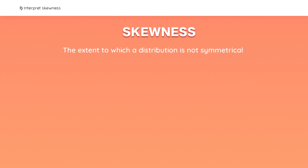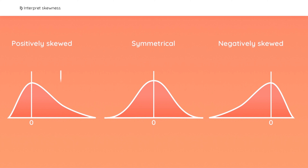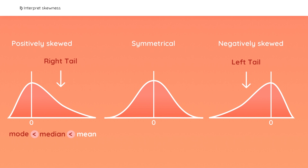Skewness refers to the extent to which a distribution is not symmetrical. A symmetrical distribution is balanced. A positively skewed distribution has a right tail, indicating many outliers in the upper region — very large gains are possible but don't happen very often. The mean is closest to the tail, so it is the largest value, followed by the median, then the mode. A negatively skewed distribution has a left tail, meaning very large losses are possible but infrequent — the mean is the smallest value, followed by the median, then the mode. For symmetrical distributions, all three values are equal.